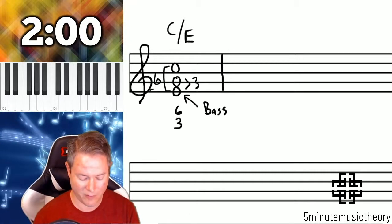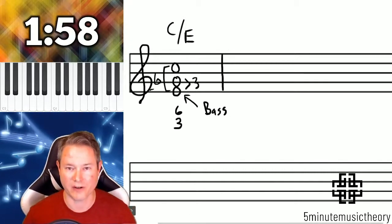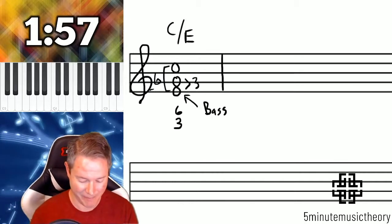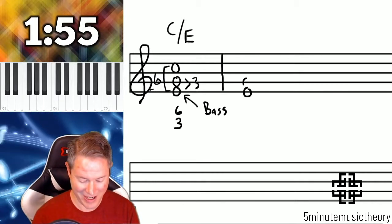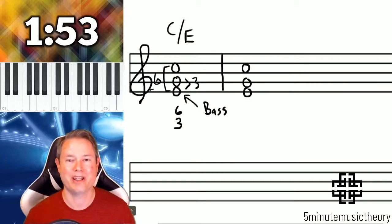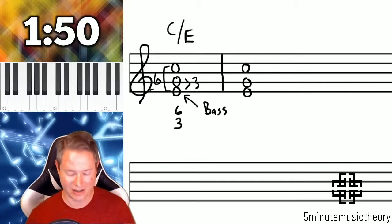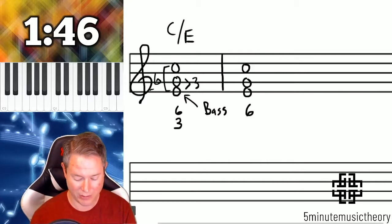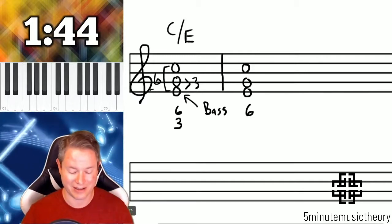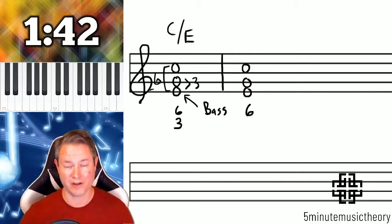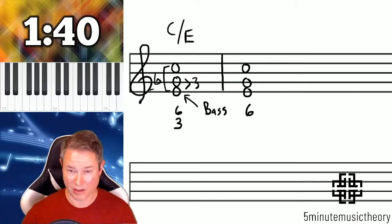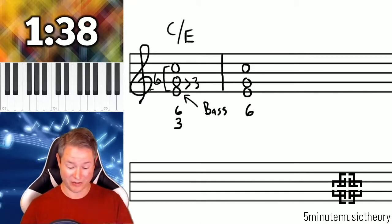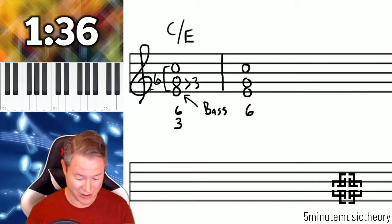So the long form version of the figured bass for a first inversion triad is 6-3. The thing is that we abbreviate this as well because the 3 doesn't really differentiate this inversion from the root position because both of them had thirds. We get rid of it and we just use the 6. So root position is blank. First inversion figured bass symbol is just simply a 6. So if you see that 6, that means that it's a first inversion.